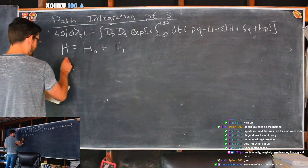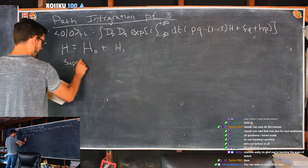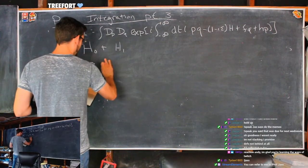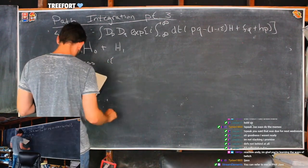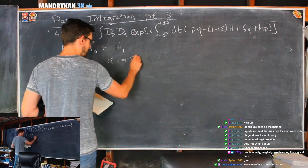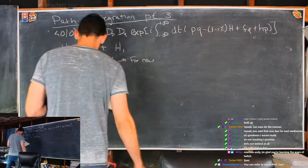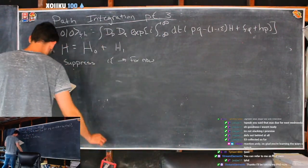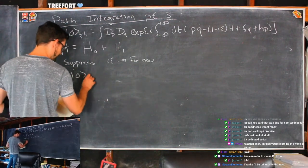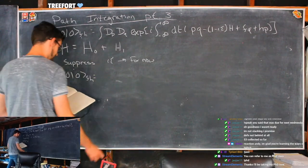For now, we're going to suppress the i-epsilon. We'll bring it back when we need it. Let's talk about what it looks like if we have this full Hamiltonian in our path integral. We'll have the integral over all paths, times the exponential of i times the integral from negative infinity to positive infinity of DT of the Hamiltonian.